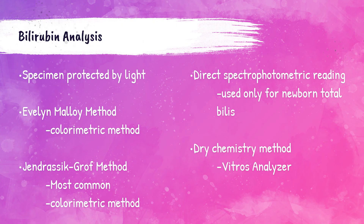Bilirubin is a common test performed in the clinical laboratory to help assess the body's liver function. Specimens being used for the testing of bilirubin must be protected from light, as room light or sunlight can metabolize the bilirubin in the specimen to a different compound, causing a falsely lower bilirubin level. The most common method for bilirubin analysis is a colorimetric method called the Gendrassic-Groff method. Another colorimetric method used is the Evelyn-Molloy method. For newborn babies, a direct spectrophotometric reading can be performed. All of these bilirubin tests are performed on a clinical chemistry analyzer.